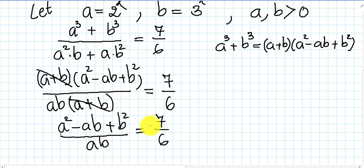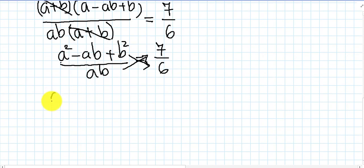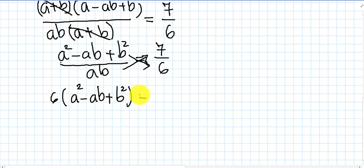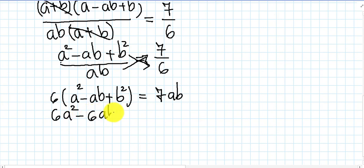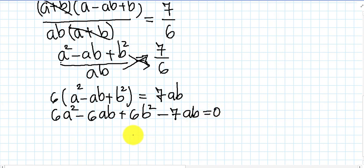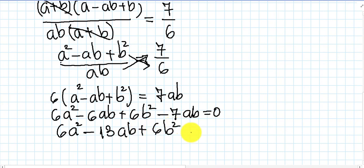We factor out AB, so AB times A plus B cancels, and we get A^2 minus AB plus B^2 all over AB equals 7 over 6. We multiply cross to get 6 times A^2 minus AB plus B^2 equals 7AB. Expanding: 6A^2 minus 6AB plus 6B^2 minus 7AB equals 0, giving 6A^2 minus 13AB plus 6B^2 equals 0.